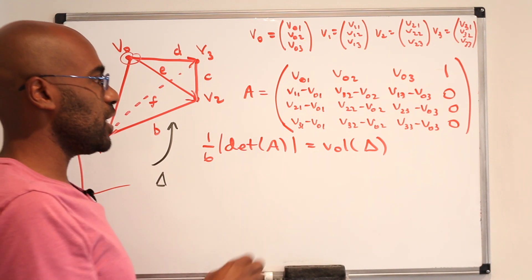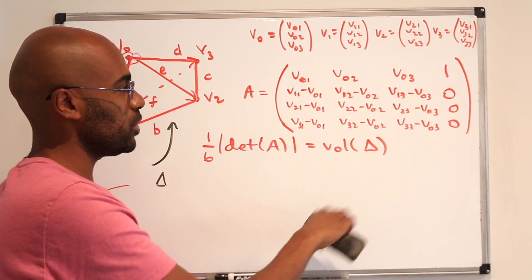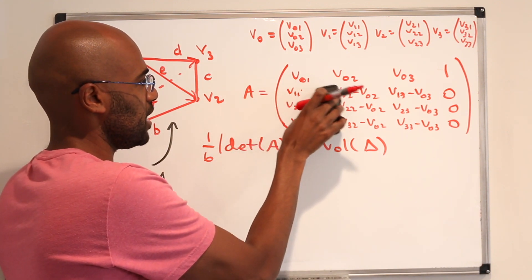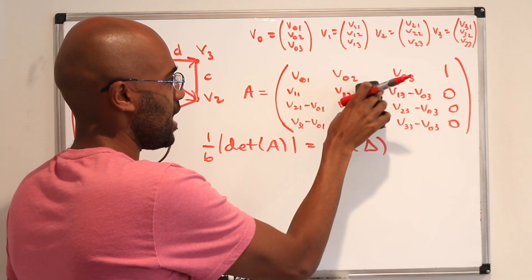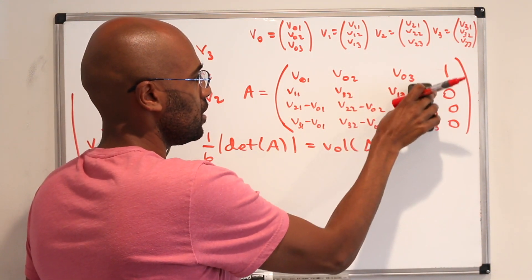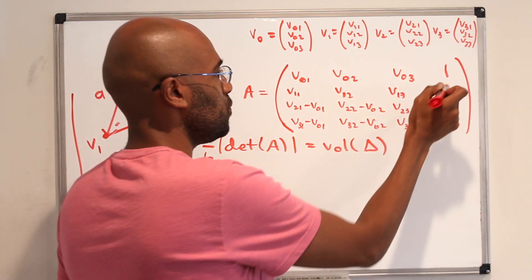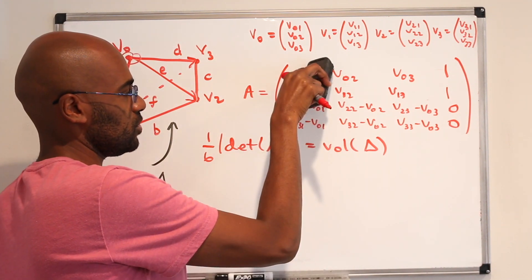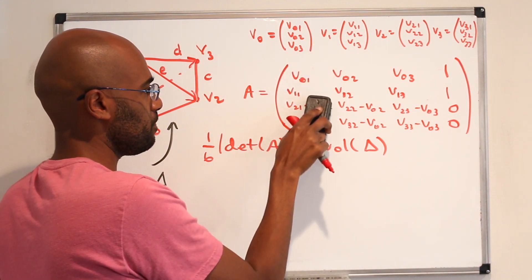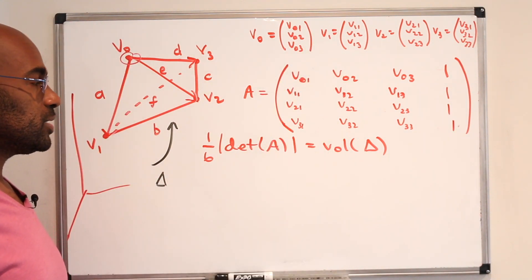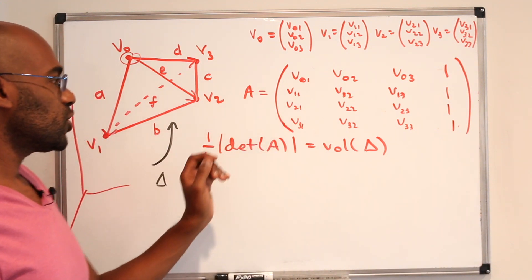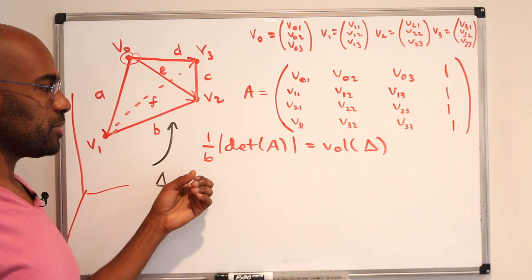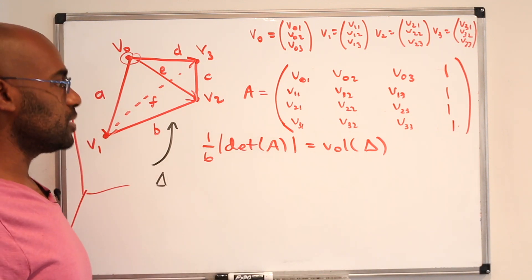Now we perform row operations on this matrix A. We take each of the lower rows and add the first row — this eliminates all of the negatives and introduces a 1 in the last spot of each row. Row operations do not change the determinant, so the absolute value of the determinant of this new matrix, multiplied by 6, is still the volume of the tetrahedron.